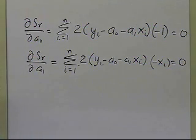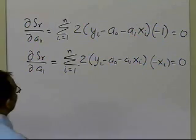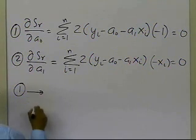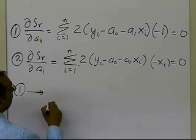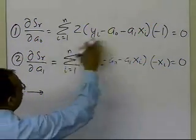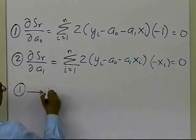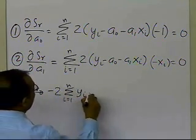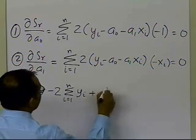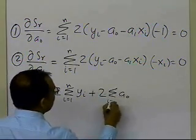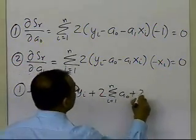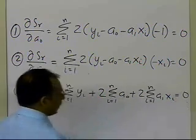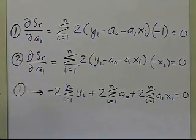So we have set up two equations, two unknowns, and we need to figure out how we are going to solve these. Let's call the first equation 1 and the second equation 2. Equation 1 gives me, after expanding the summation: minus 2 summation (i=1 to n) of yi, plus 2 summation of a0, plus 2 summation of a1·xi, equal to 0. That's what I get from the first equation.